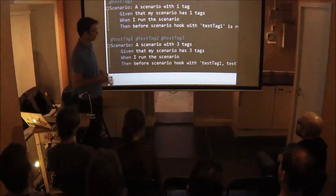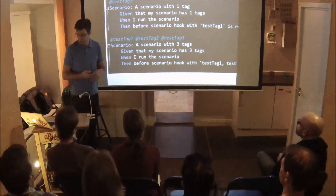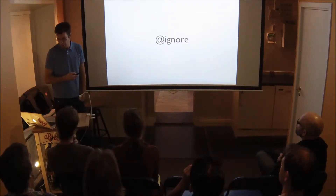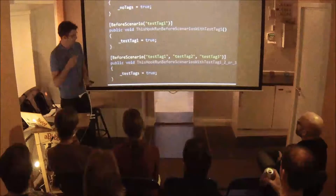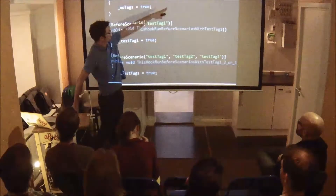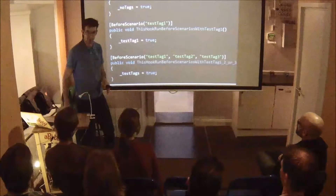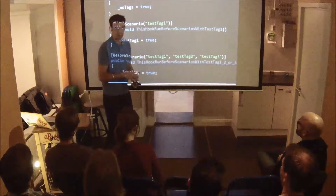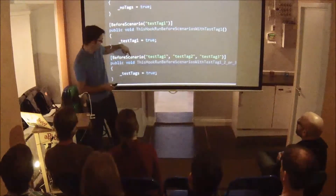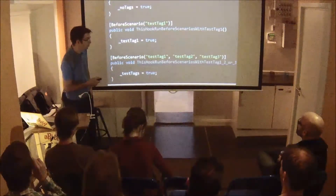Tags are simple — you write an at-symbol and then some text. There's only one tag supported out of the box, which is @ignore. But you can write whatever you want. It becomes even more powerful when combined with hooks: one method runs before all scenarios regardless of tags, while another method runs only before scenarios that have a specific tag on them. I've been using things like 'restore database' as a tag.